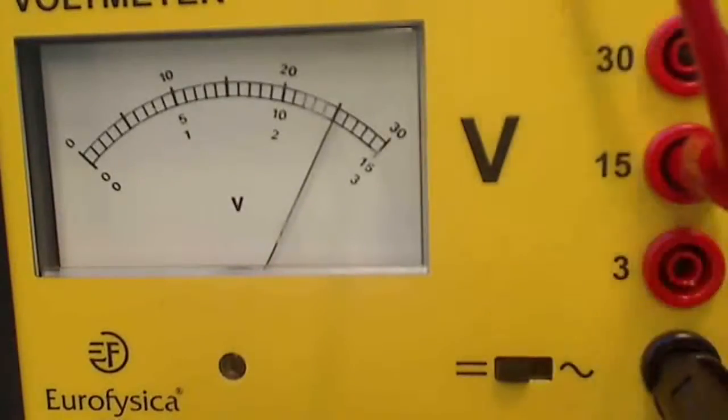Now I should use the middle reading of the display that runs from 0 to 15 volts. You can see that there are 10 divisions between 0 and 5 volts. Thus each division equals 0.5 volts. Because the pointer is 5 divisions above 10, the voltage is now 12.5 volts.